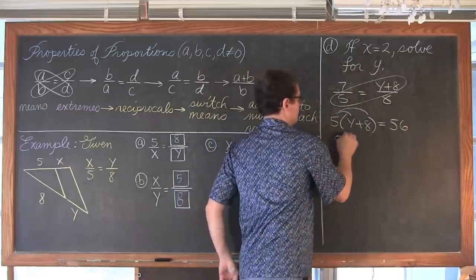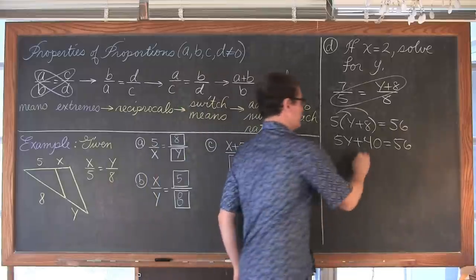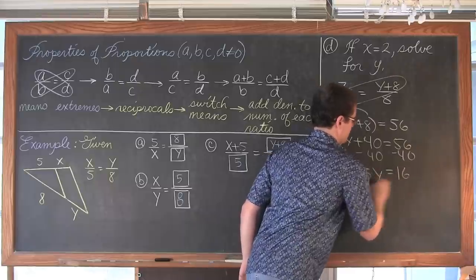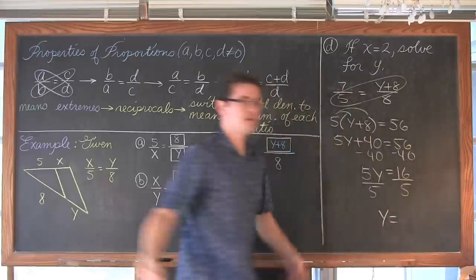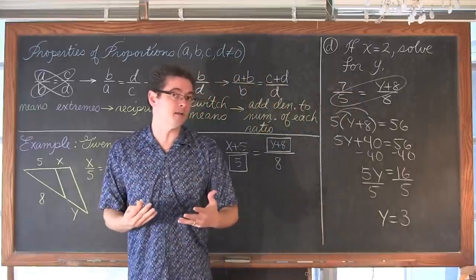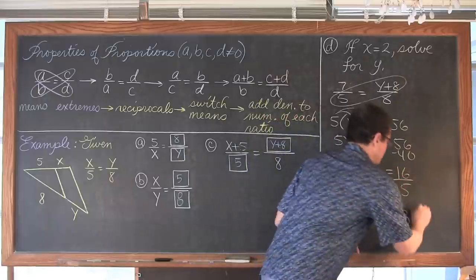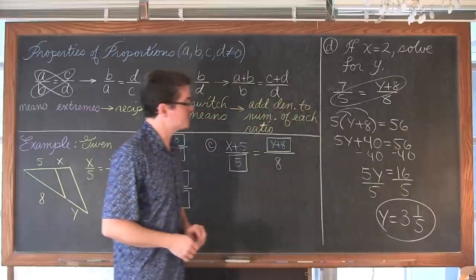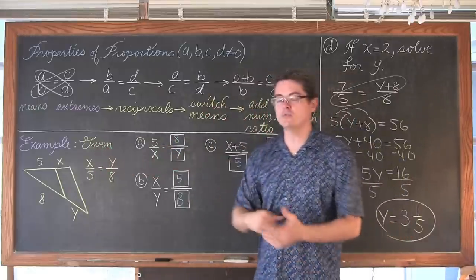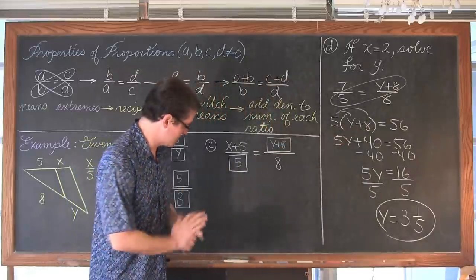We have 5 times (y+8) = 7 times 8 = 56. Distributing: 5y + 40 = 56. Subtract 40 from both sides: 5y = 16. Divide by 5: y = 3 and 1/5. That is what y equals when x equals 2. We could have picked any of the four equal ratios and gotten the same answer. I picked this version specifically to remind you about the distributive step when solving that kind of problem.